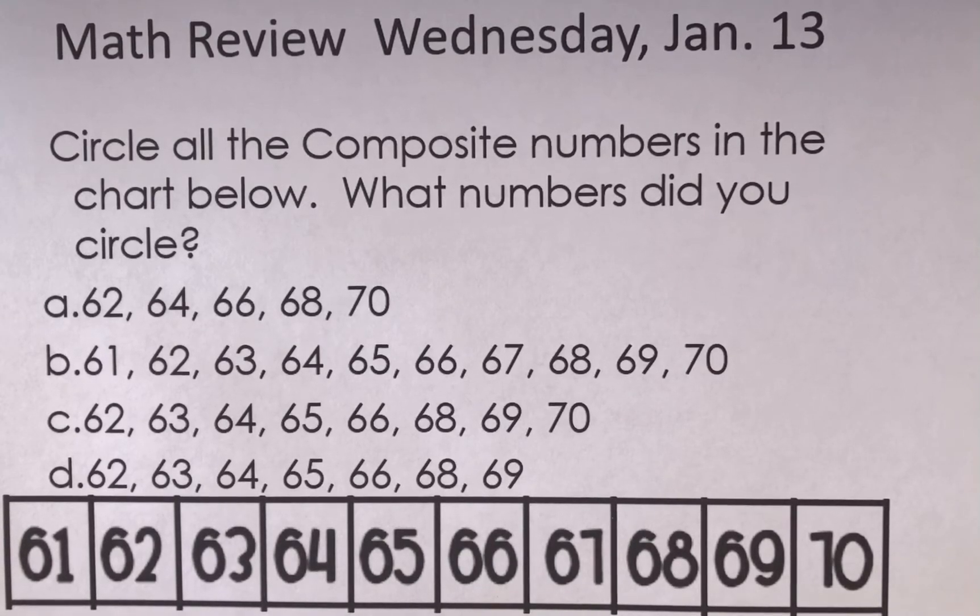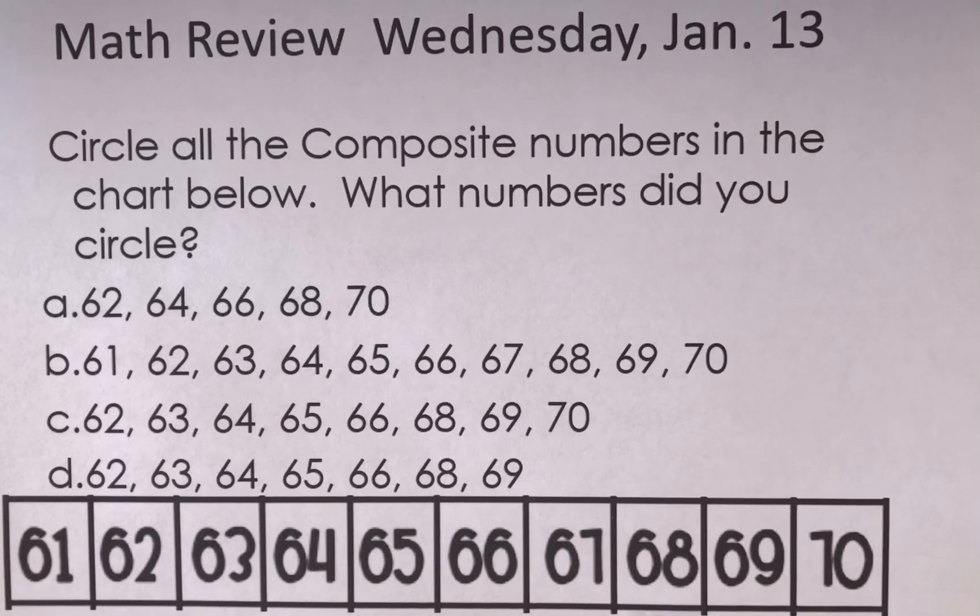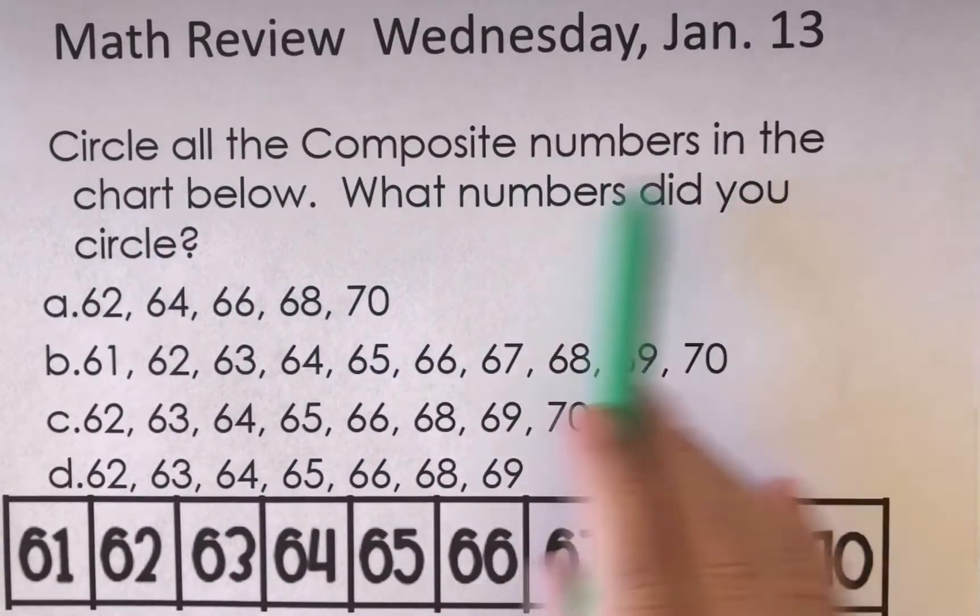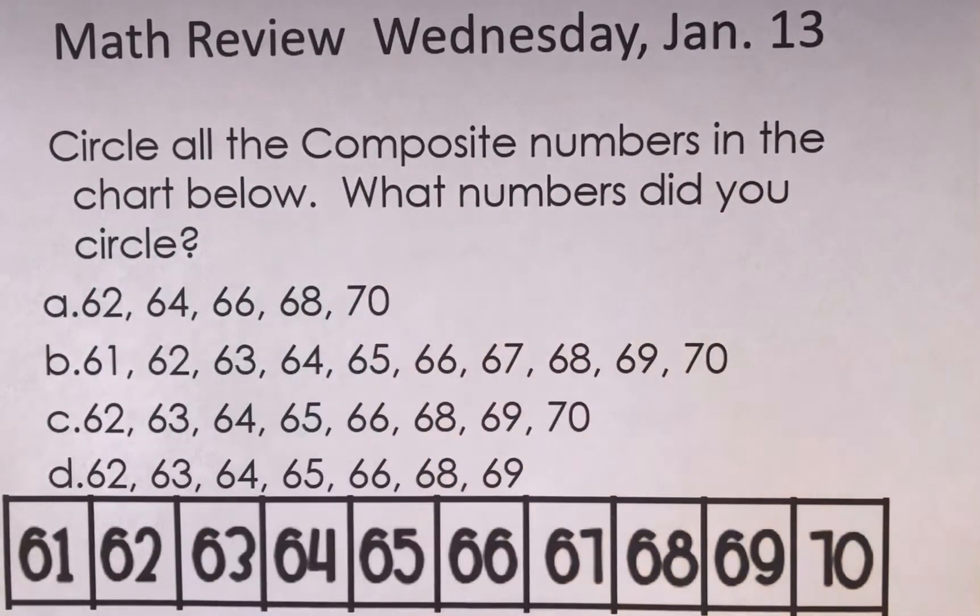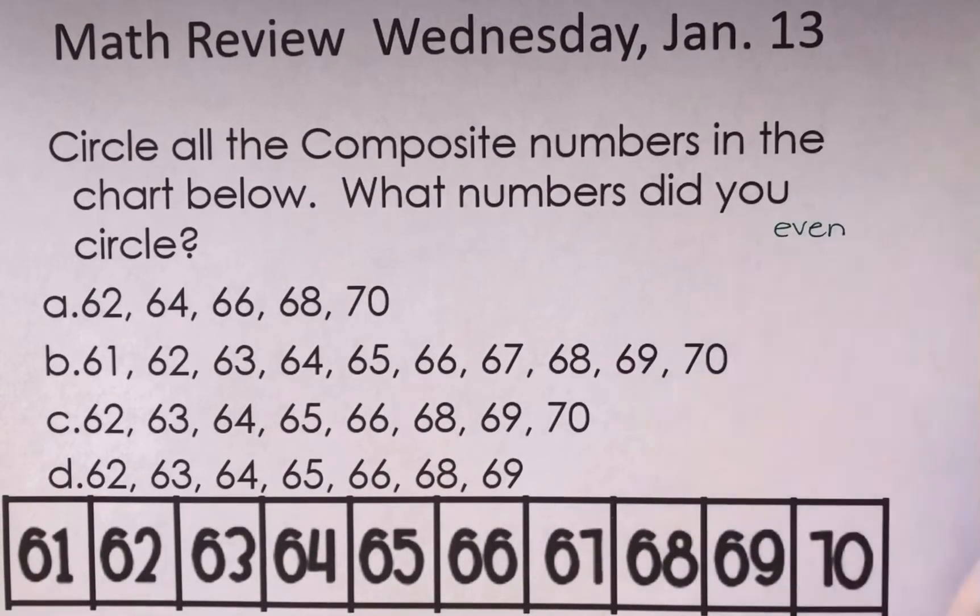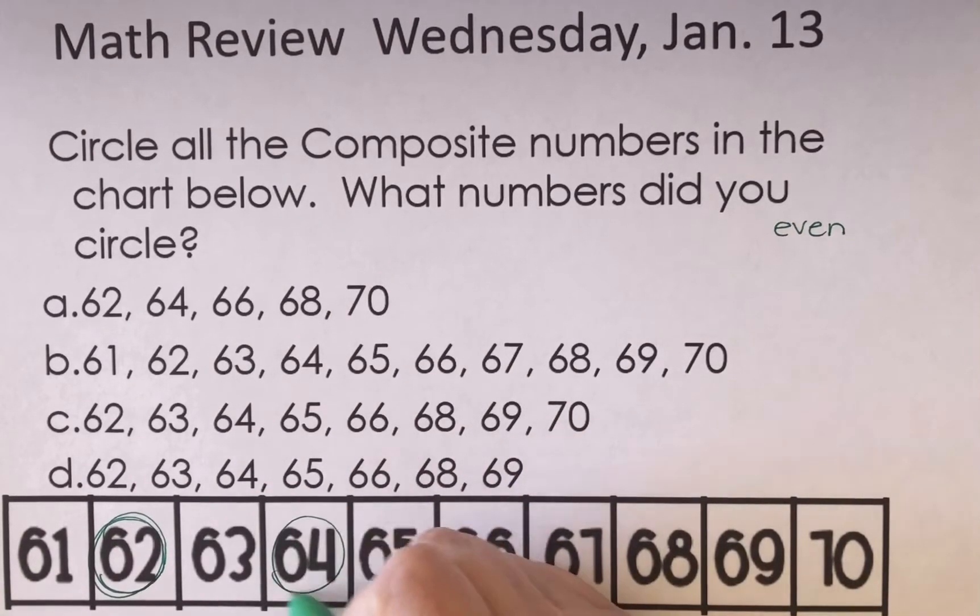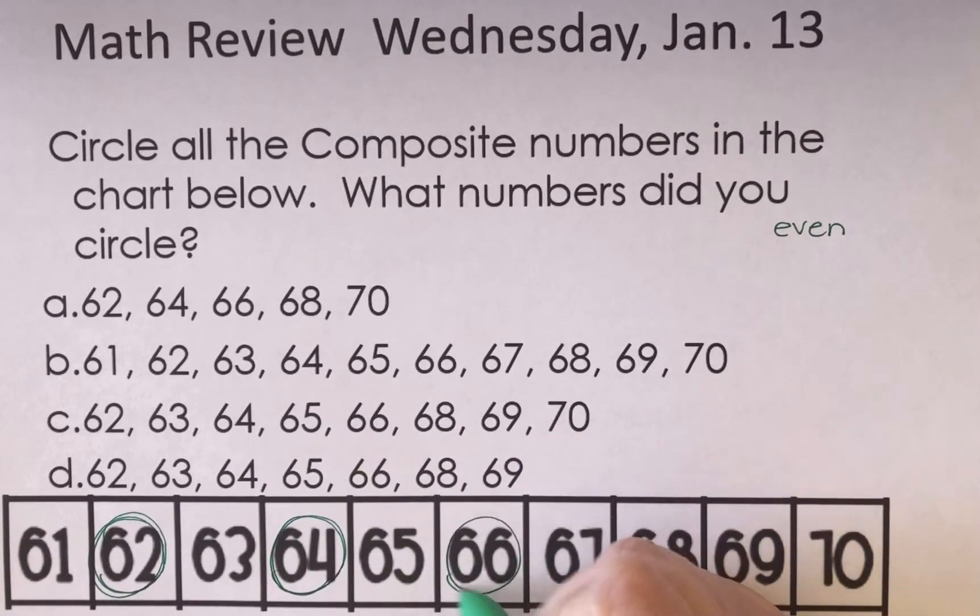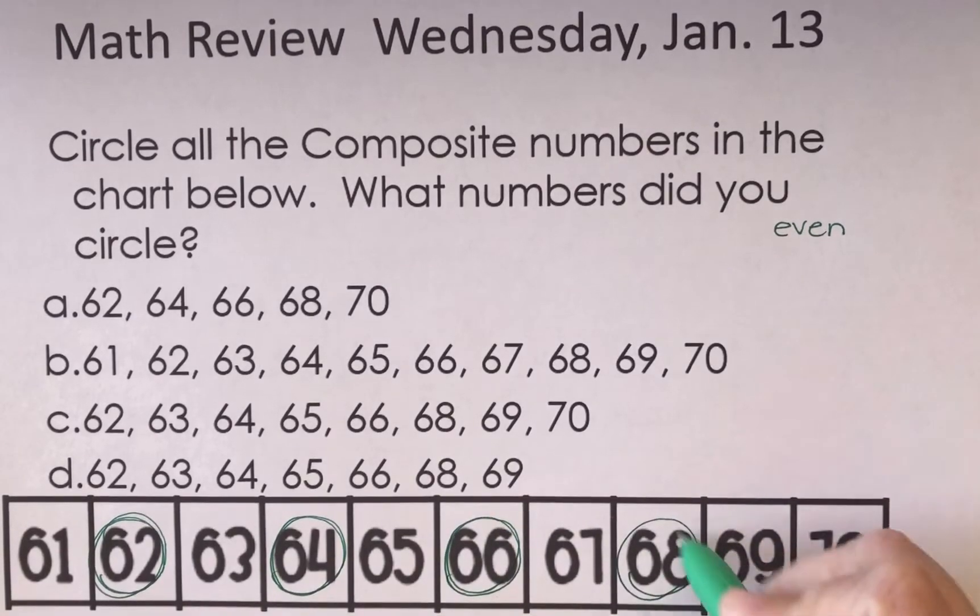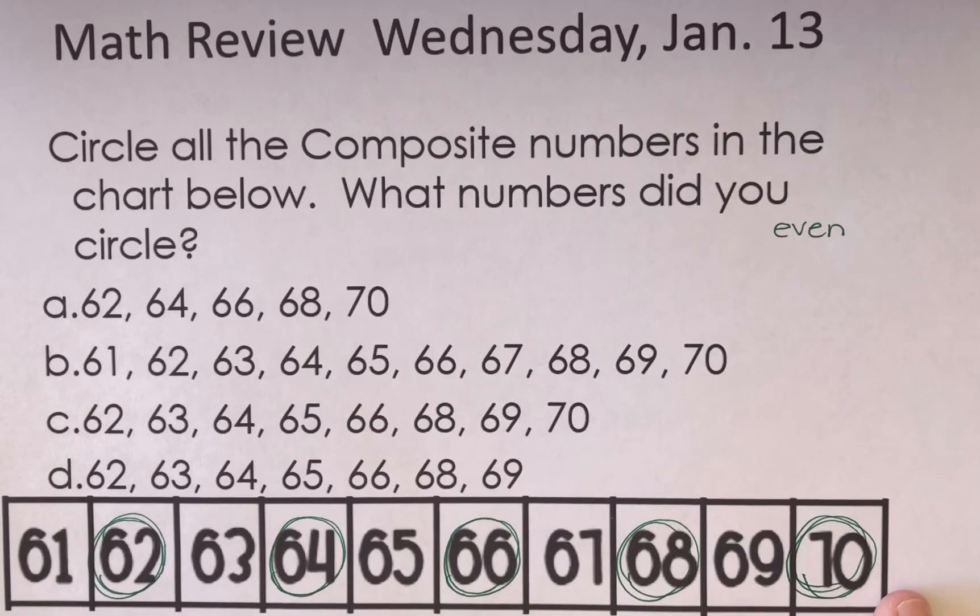So all of these numbers, none of these are the number two. So we're just looking for even numbers first because we're going to circle all of the composite numbers in the chart below. And then it wants to know which ones we circled. So we're going to start with all even numbers. So 62 is even, 64 is even, so is 66, so is 68, and so is 70. Those are all even numbers.